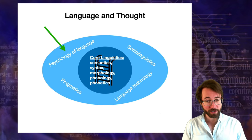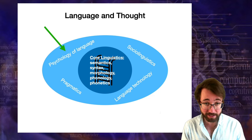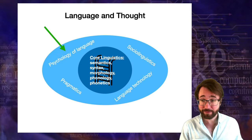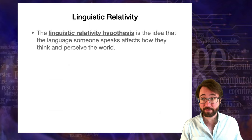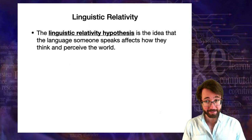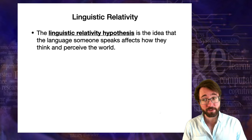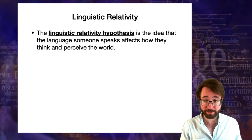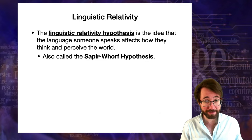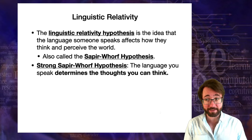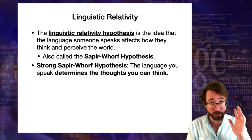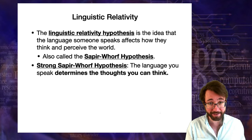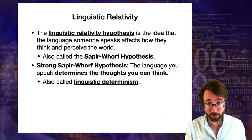We are studying language and thought, which is one aspect of the psychology and cognitive science of language. We've been talking about the idea of linguistic relativity. The linguistic relativity hypothesis is the idea that the language someone speaks actually affects how they think and perceive the world, also called the Sapir-Whorf hypothesis. We can divide this into the strong Sapir-Whorf hypothesis, which says that the language you speak determines and constrains the thoughts you can think — also called linguistic determinism.